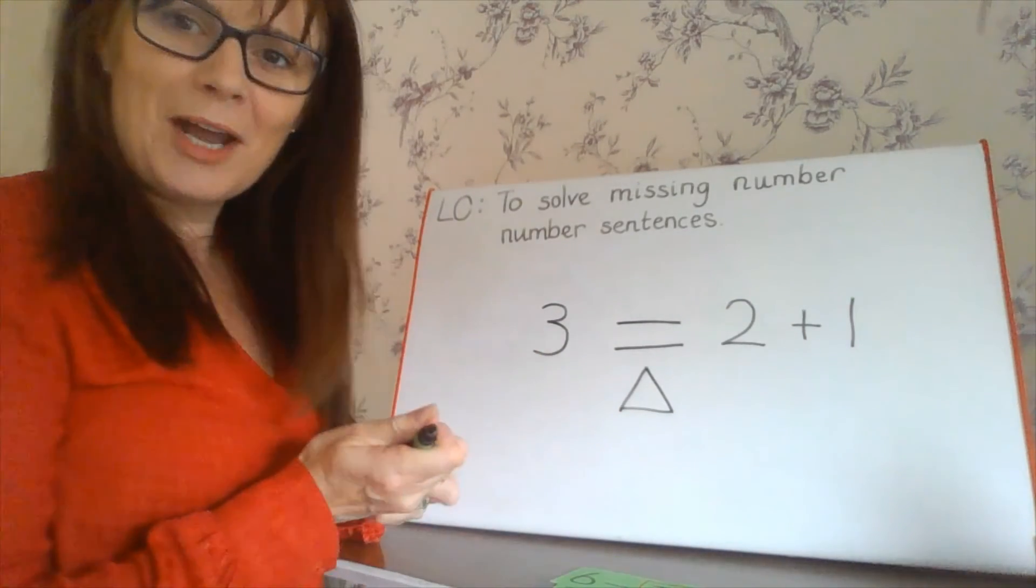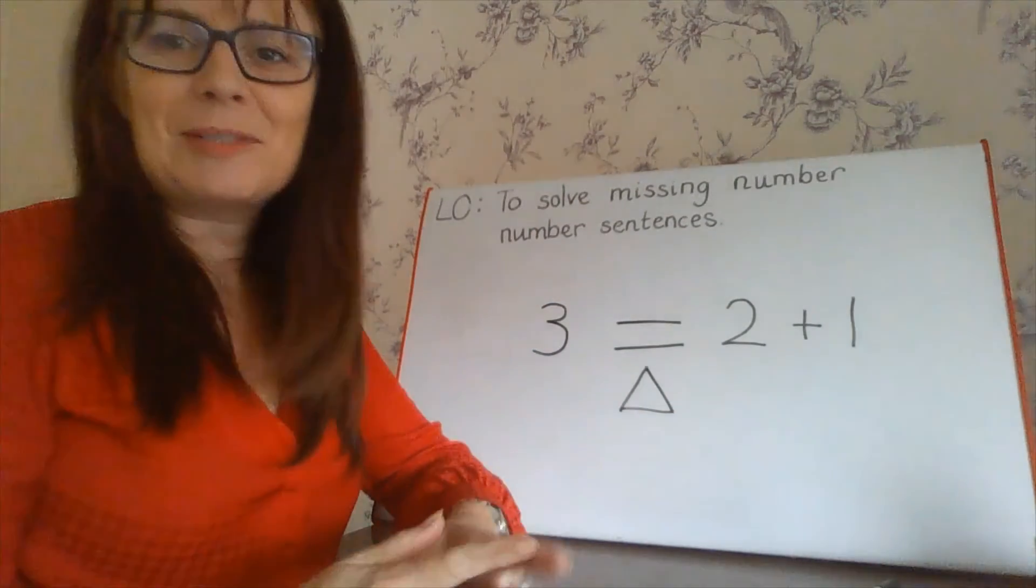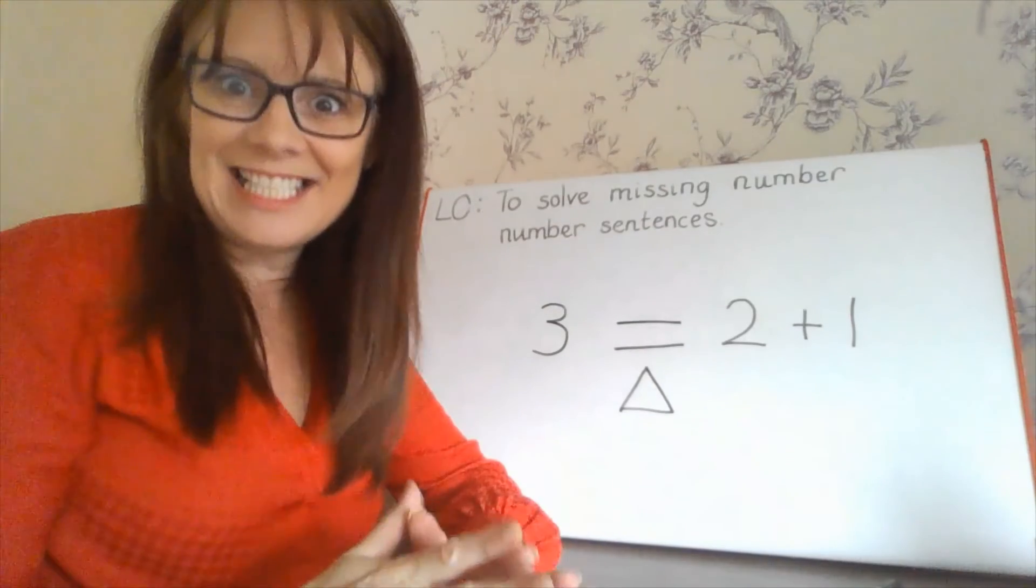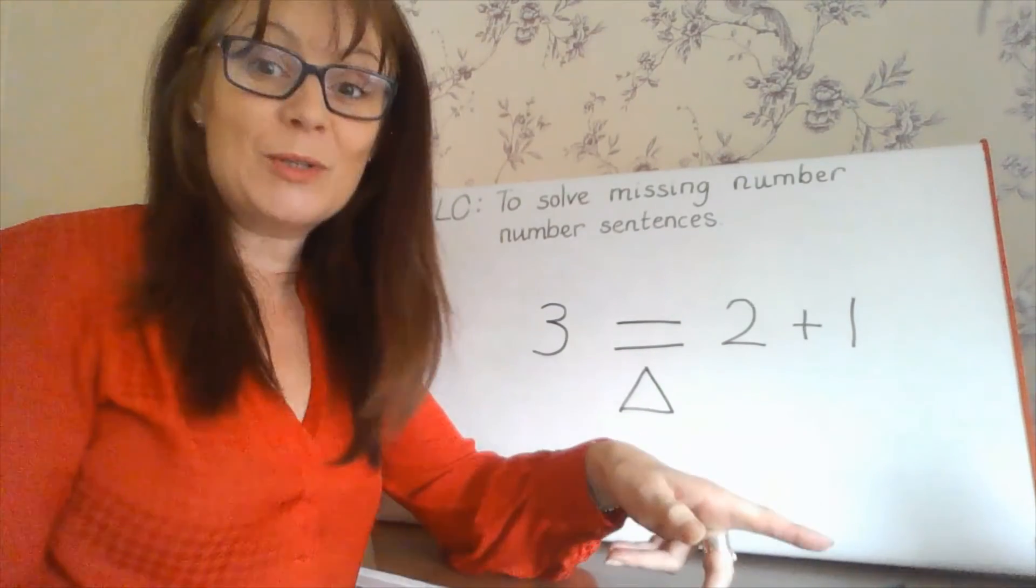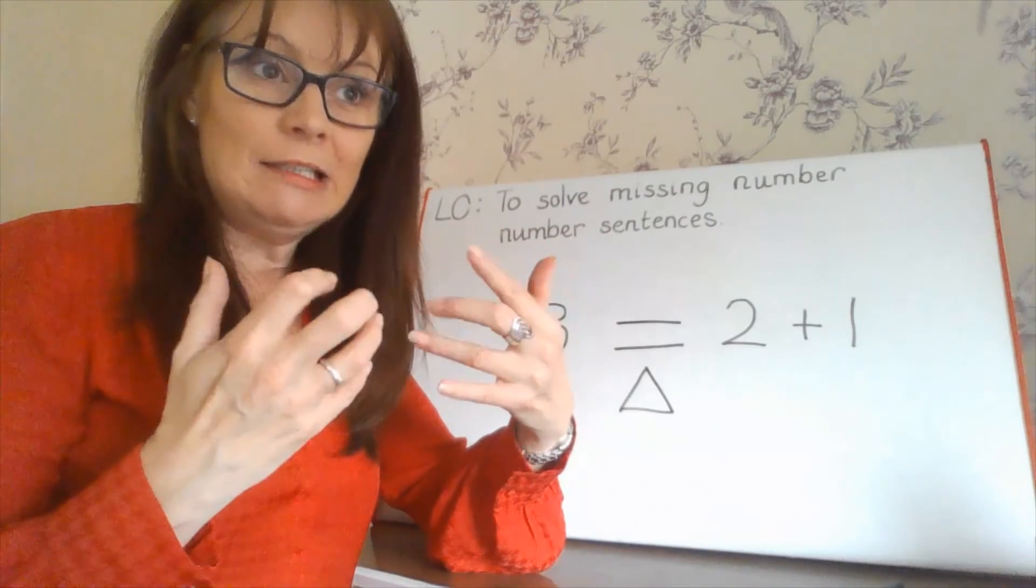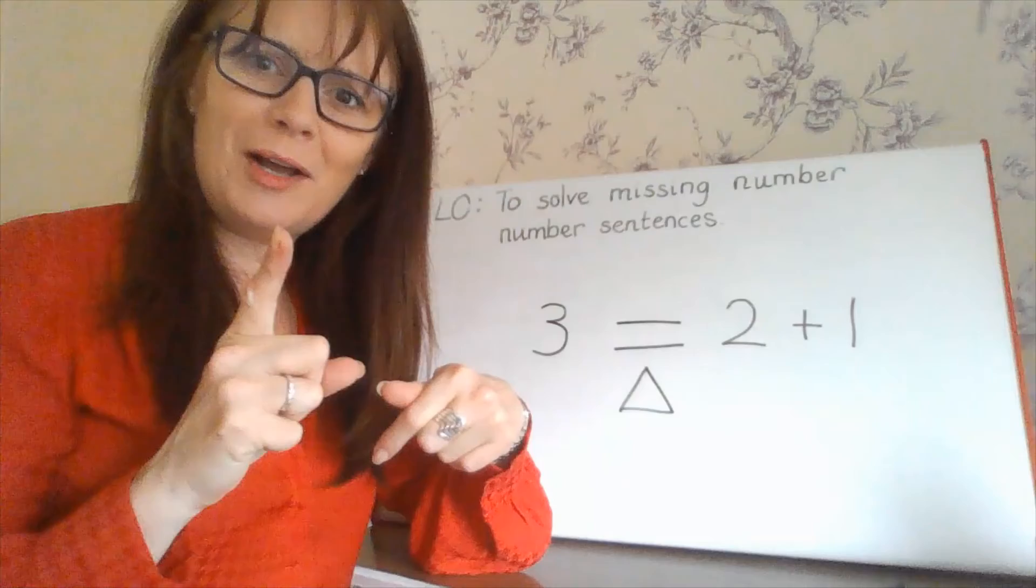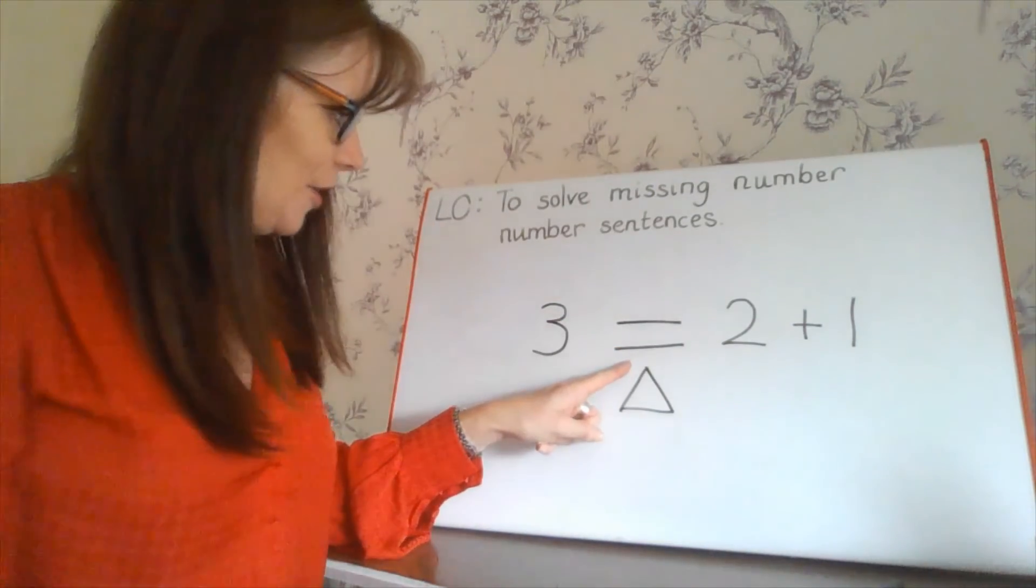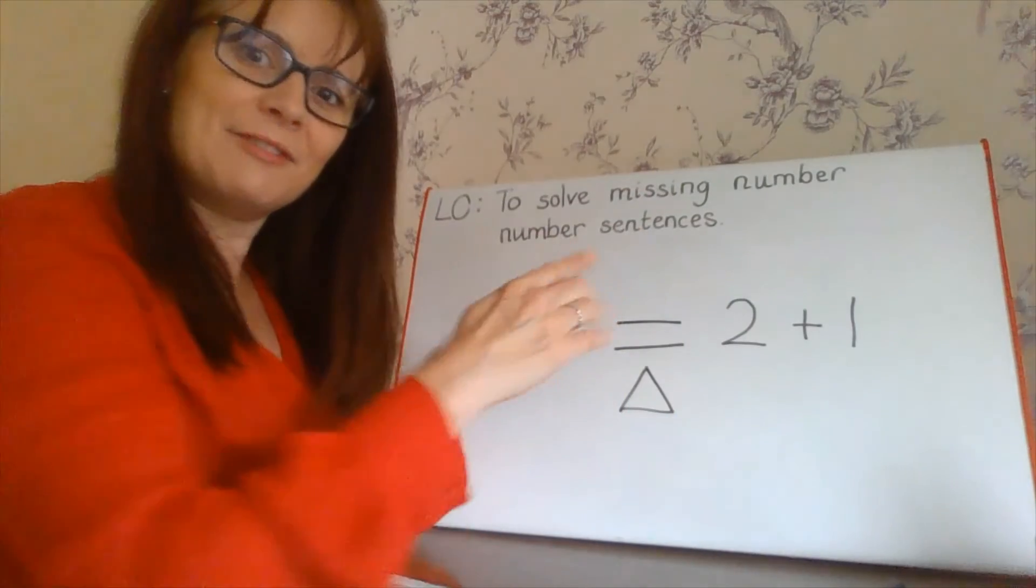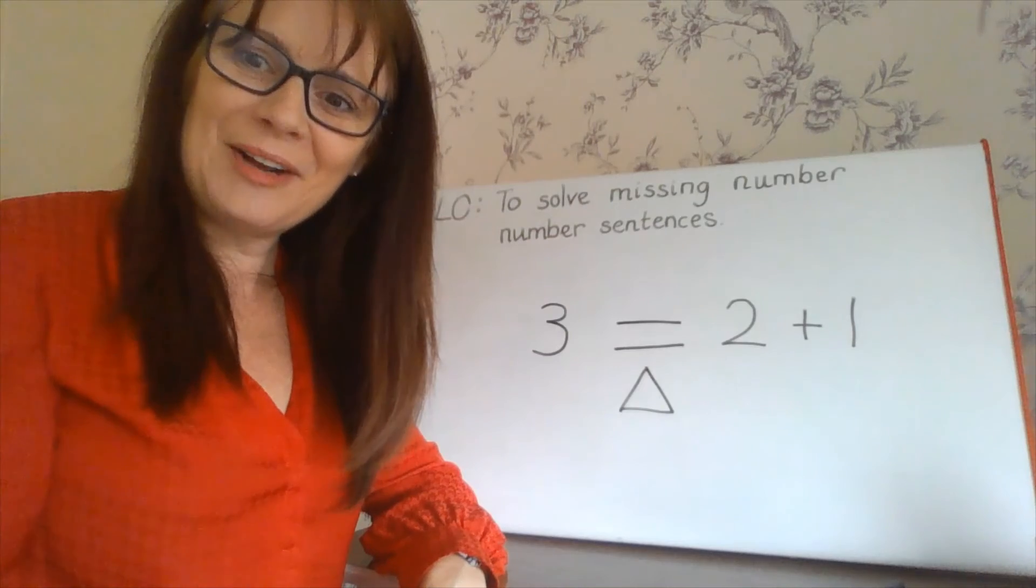So I've got a challenge for you now. I've got a challenge. I've got some number sentences, number sentences for you to solve. They've got missing numbers. You can use your counters. You can use your fingers. You might need extra counters because some of the numbers are quite big, but it should work. And remember, the equal sign, the numbers both sides have to balance, have to be the same, the same as. Have a go.